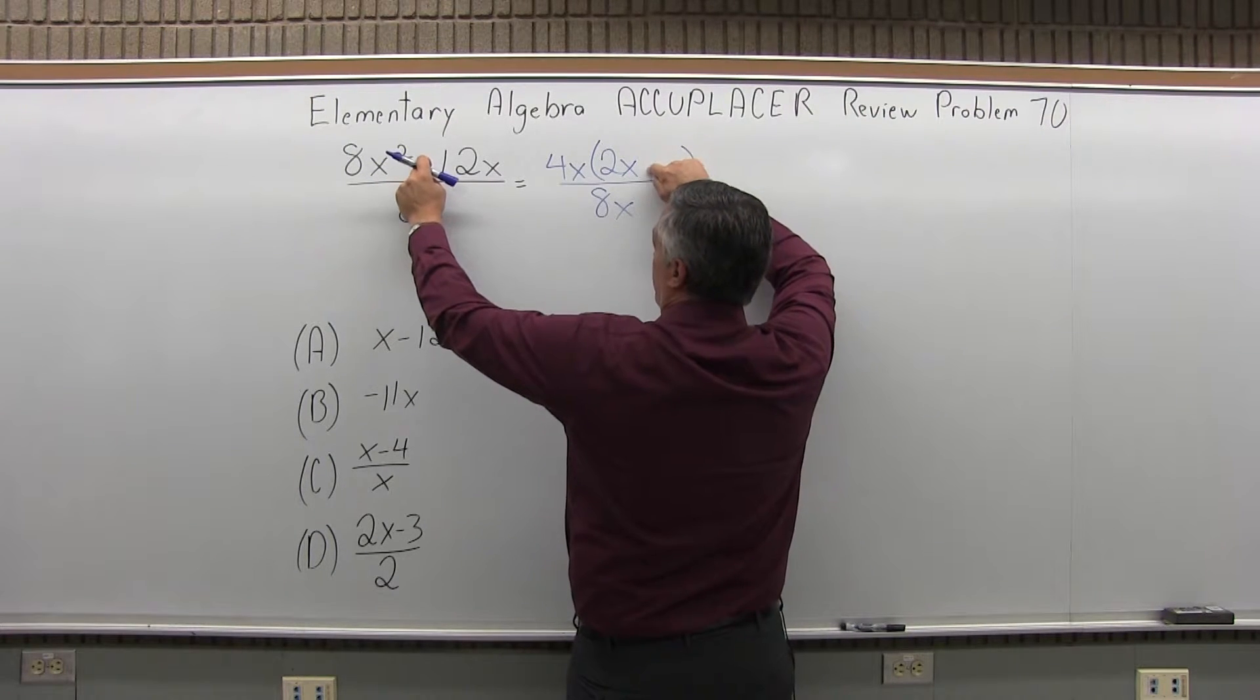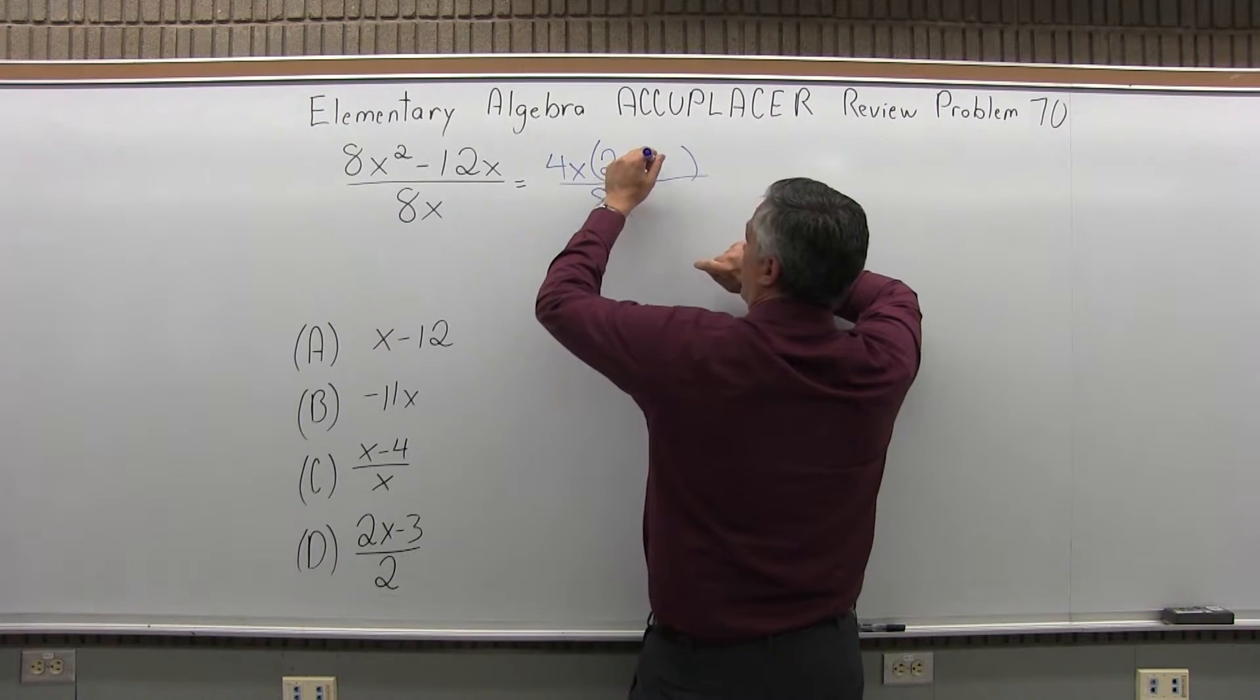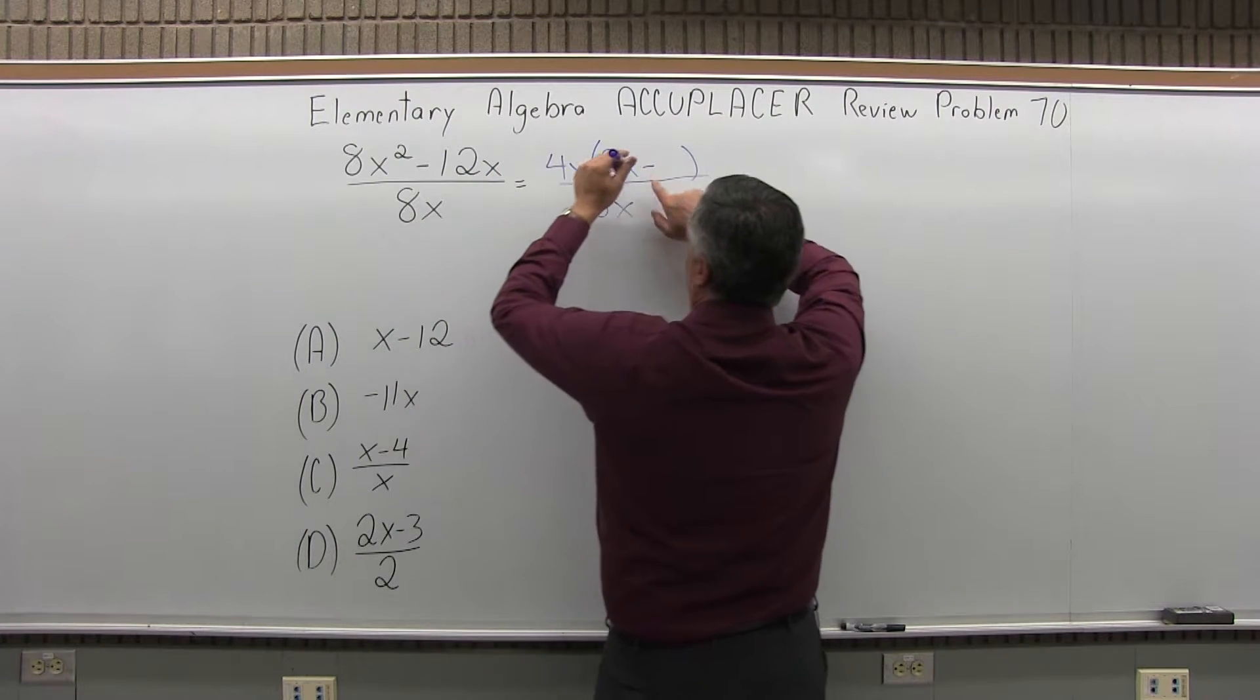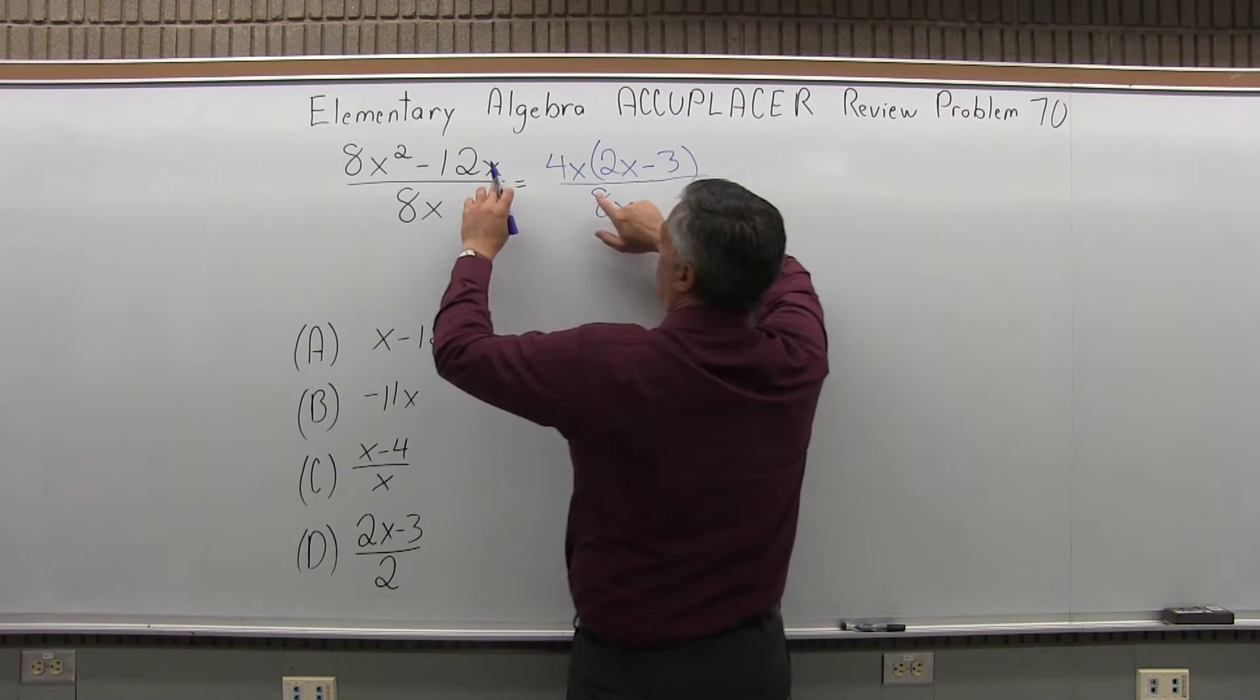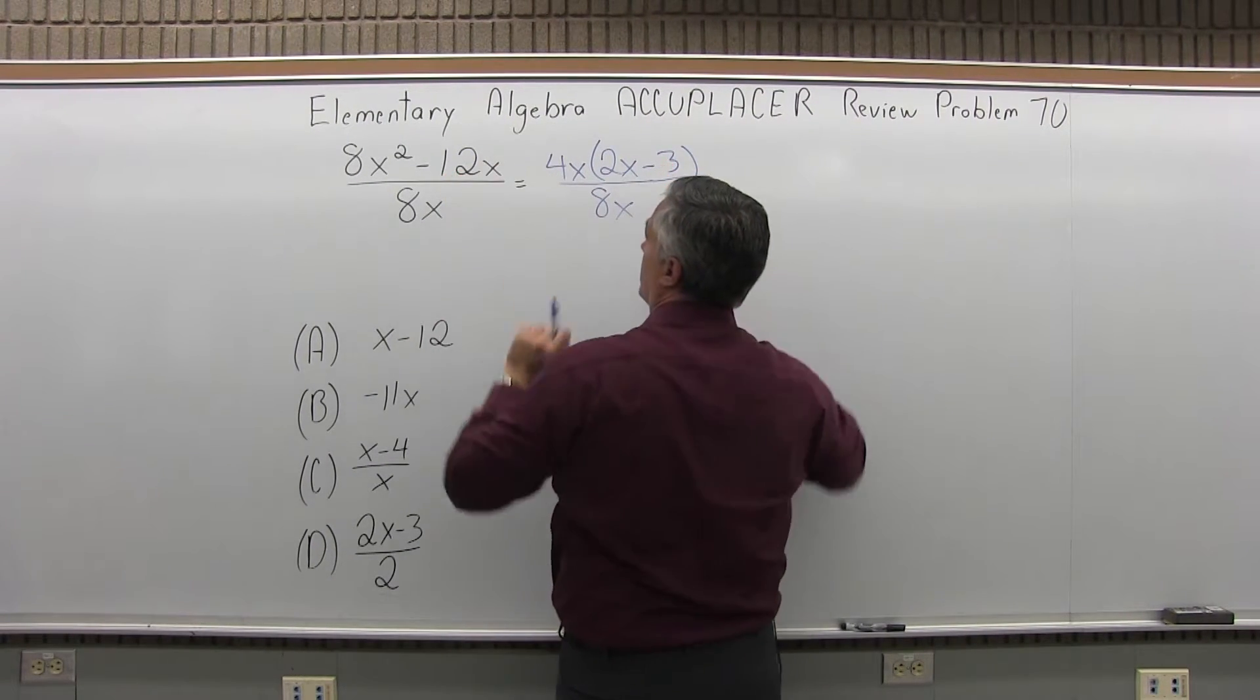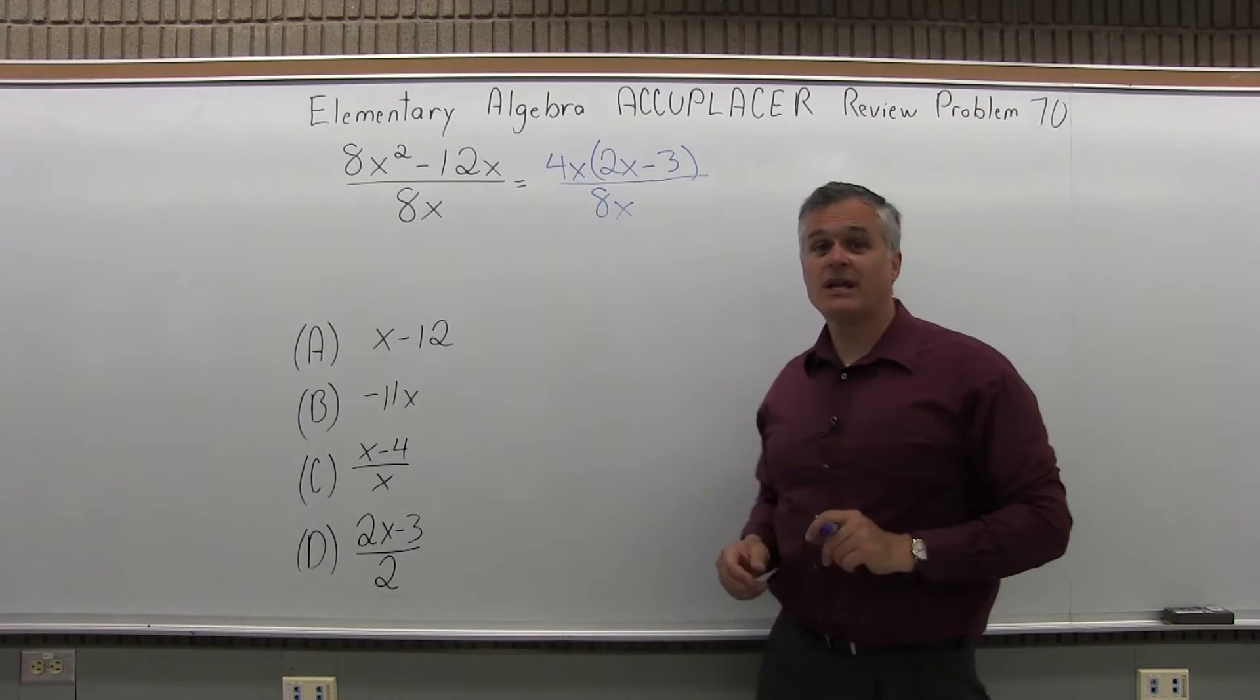The next piece, I'm going to have a minus. Pay attention to the sign. 4 times something makes 12, so it's 3. And again, it's minus 3. The x is already set. So 4x times minus 3 is minus 12x, and I have 8x on the bottom.